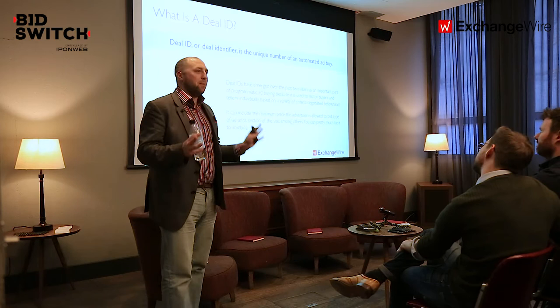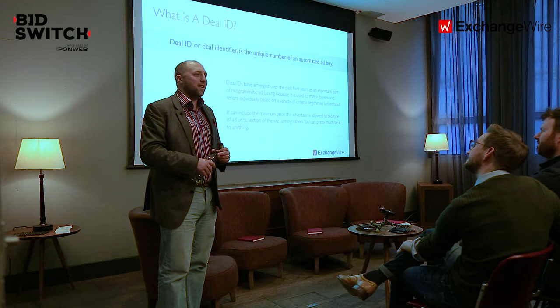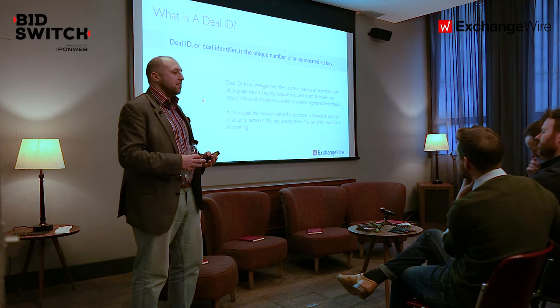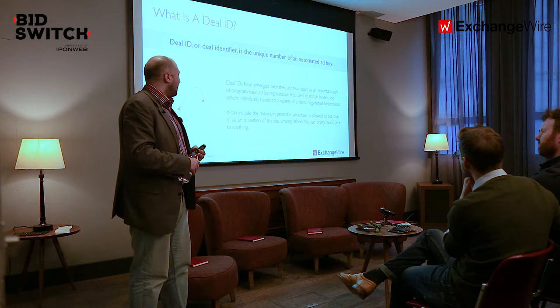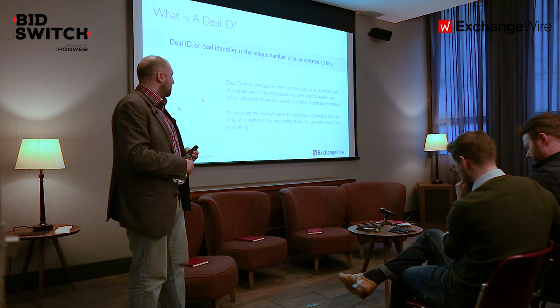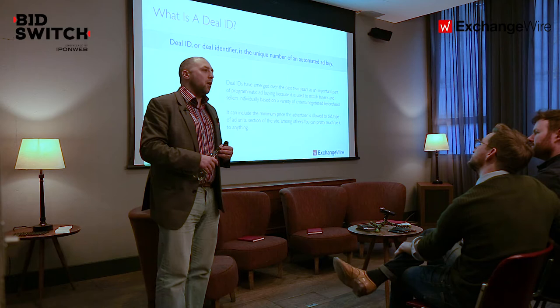Let's start with what is a deal ID. A deal ID, also known as a deal token, is a unique identifier for an automated buy to be able to see it and act upon it. It has emerged over the last two years as a really important part of the ecosystem for matching buyers and sellers, and it's usually negotiated beforehand based upon a set of criteria.